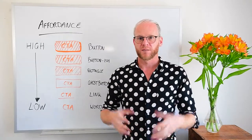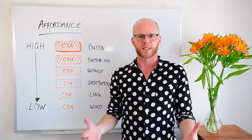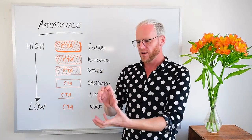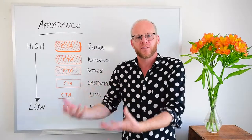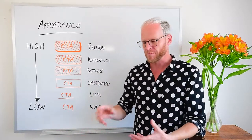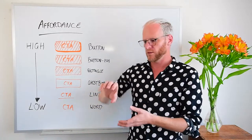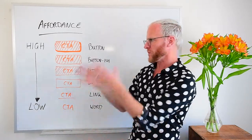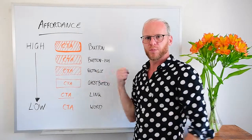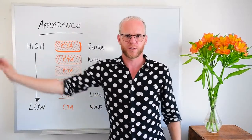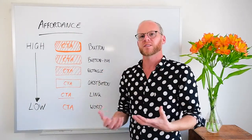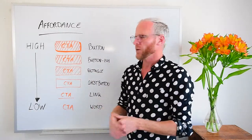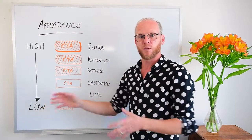The design principle of affordance is all about how clearly an object's design infers how it should be used. Think of a round door handle — that implies you can turn it; a flat one, push it down; a door with a handle, you pull; a flat panel, you push. For a button, the affordance level is concerned with how clickable it appears. We have high affordance down to low affordance.